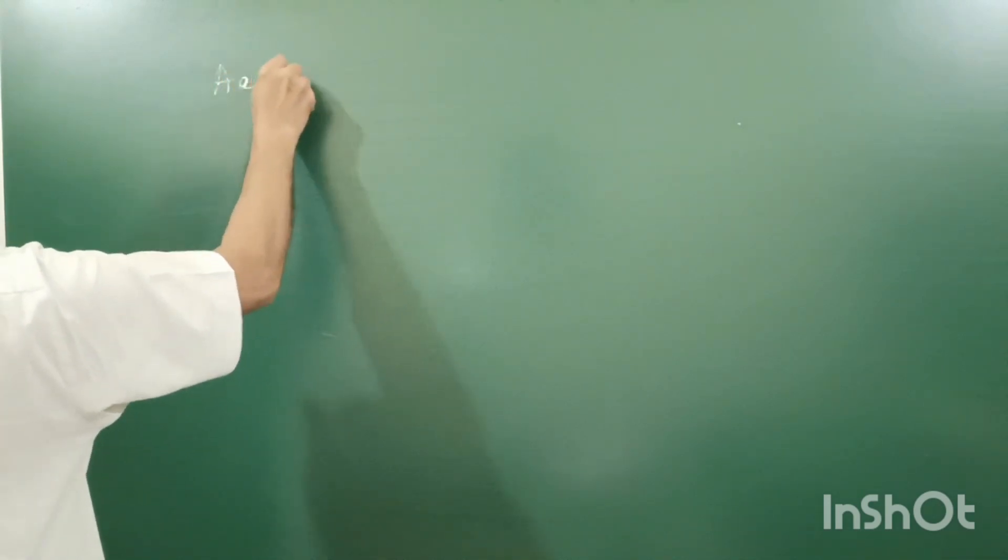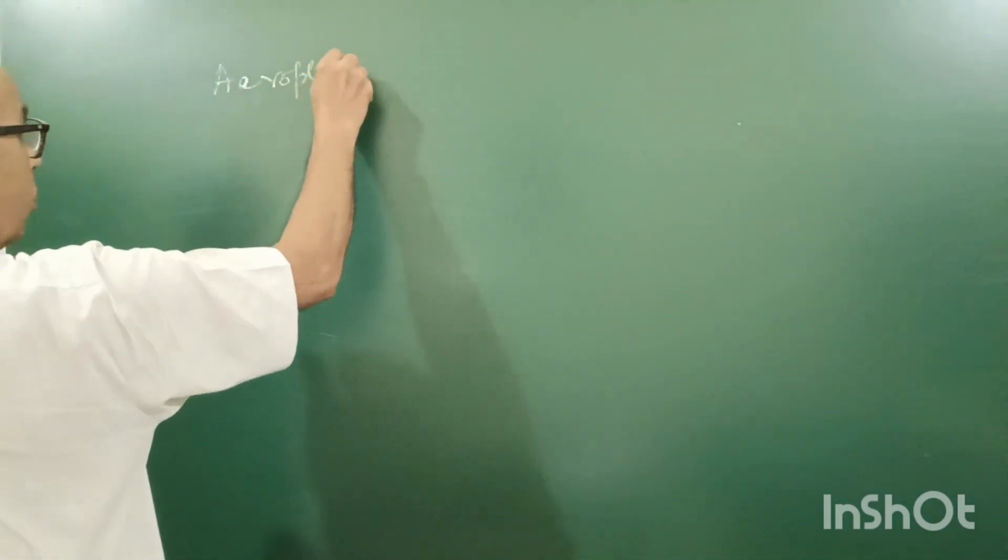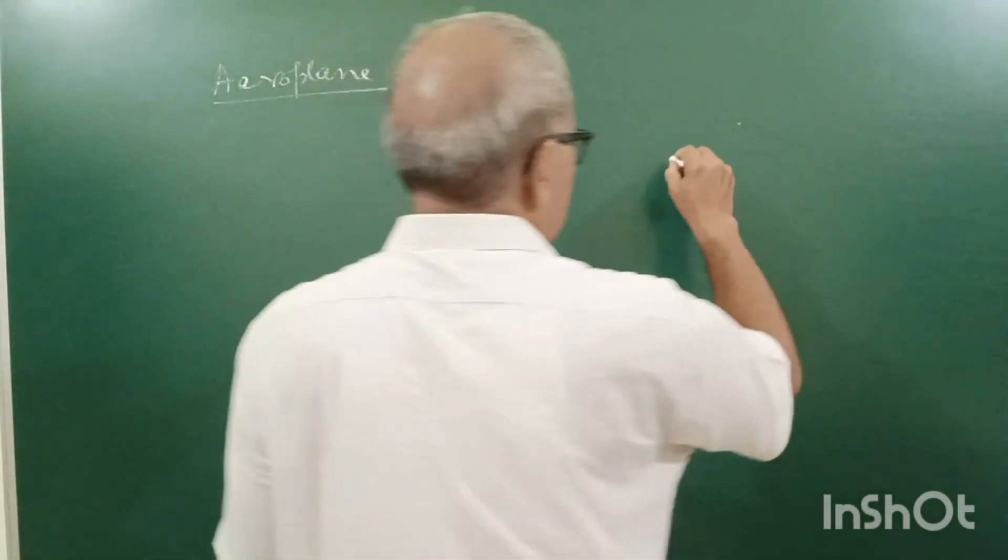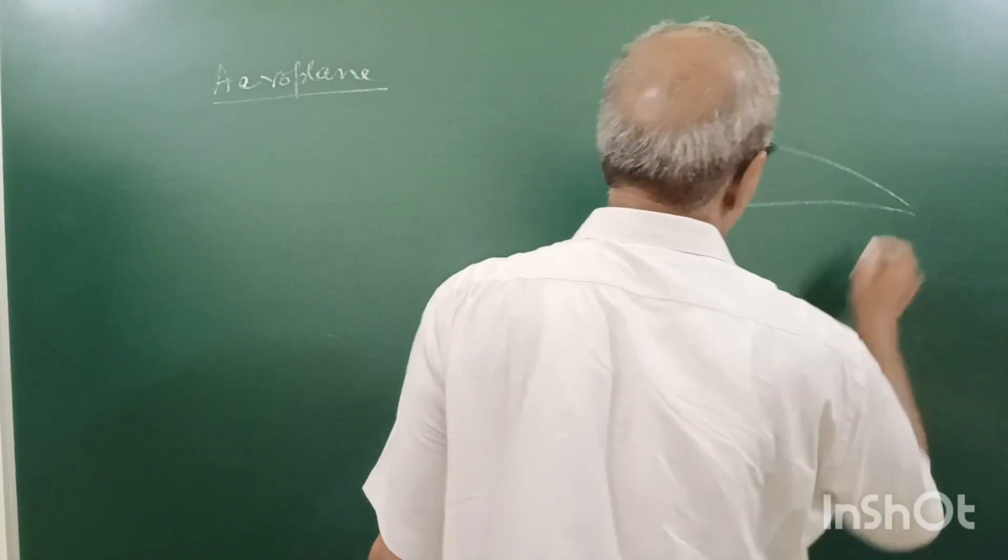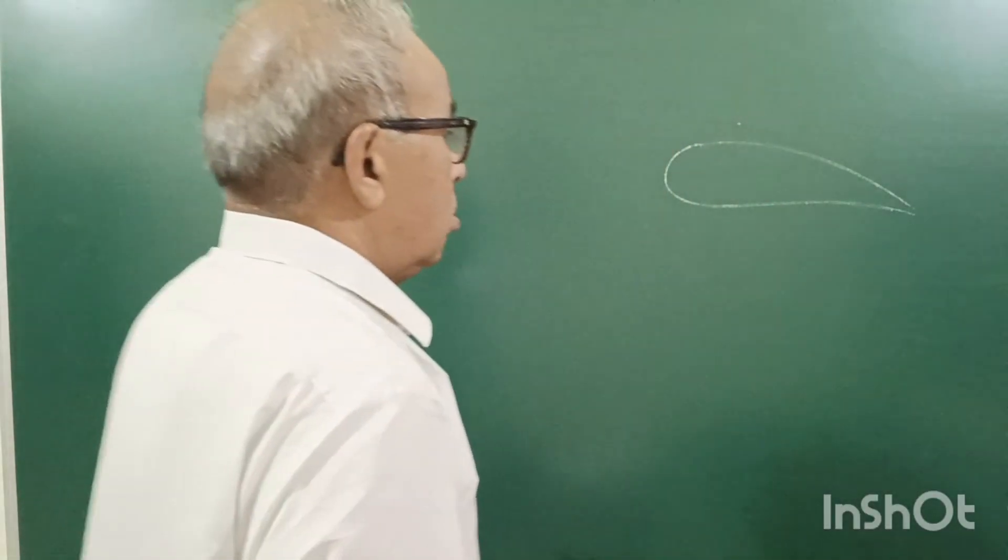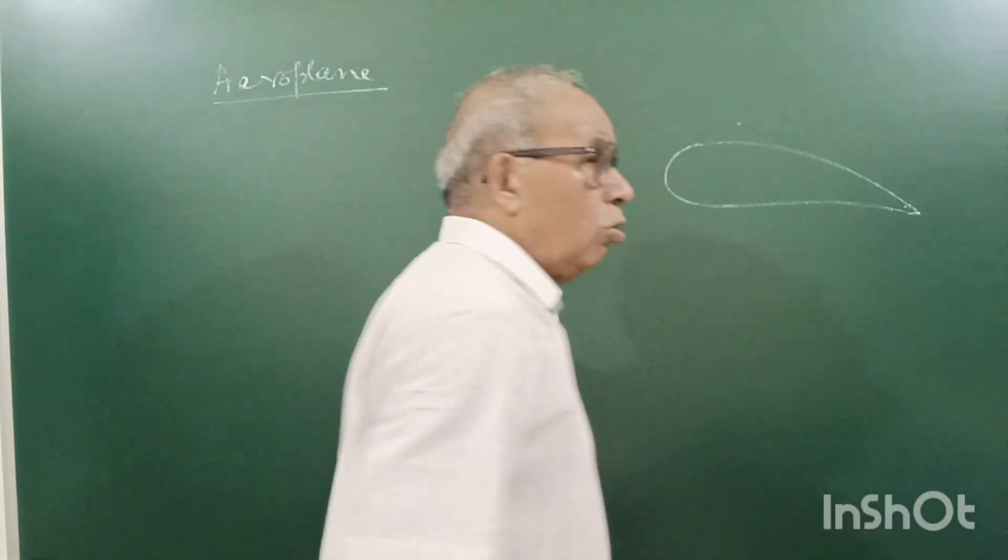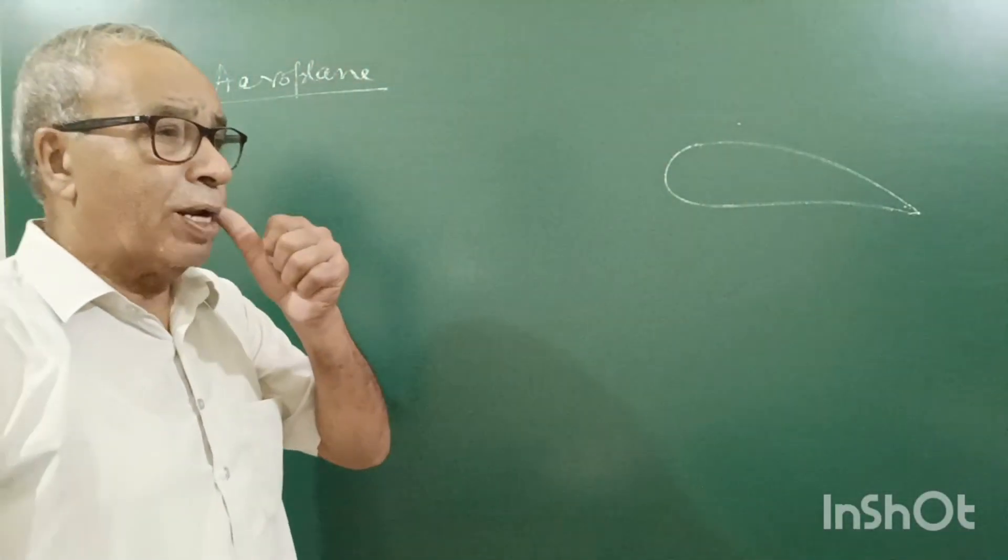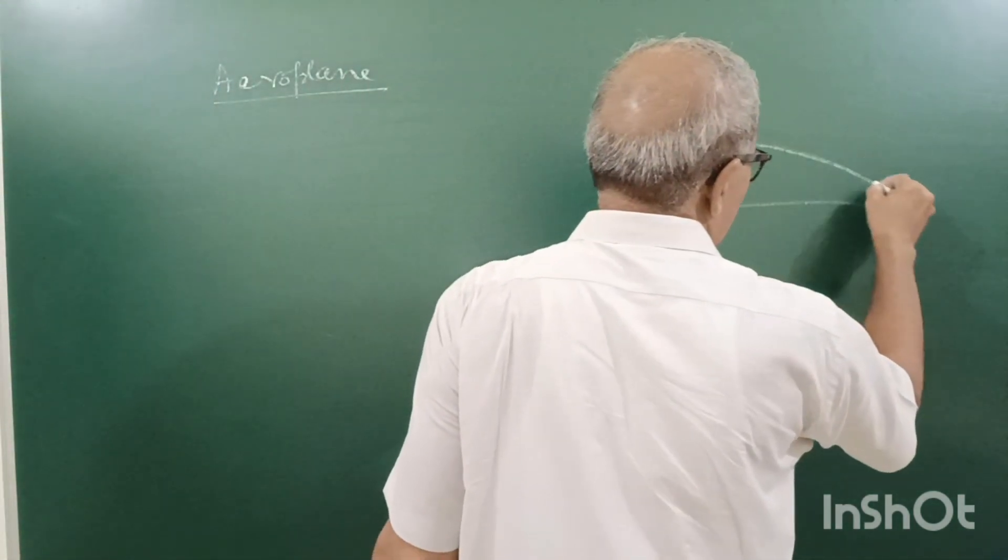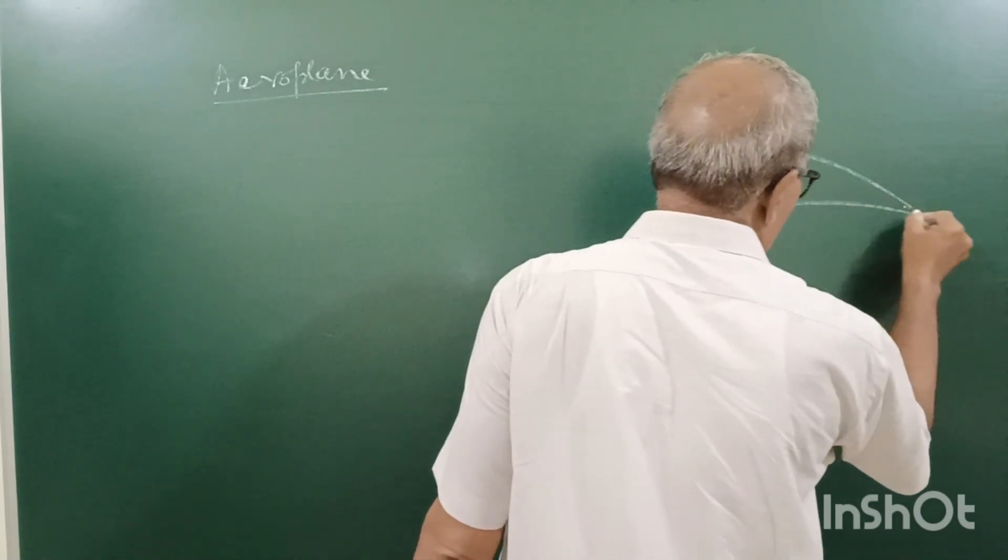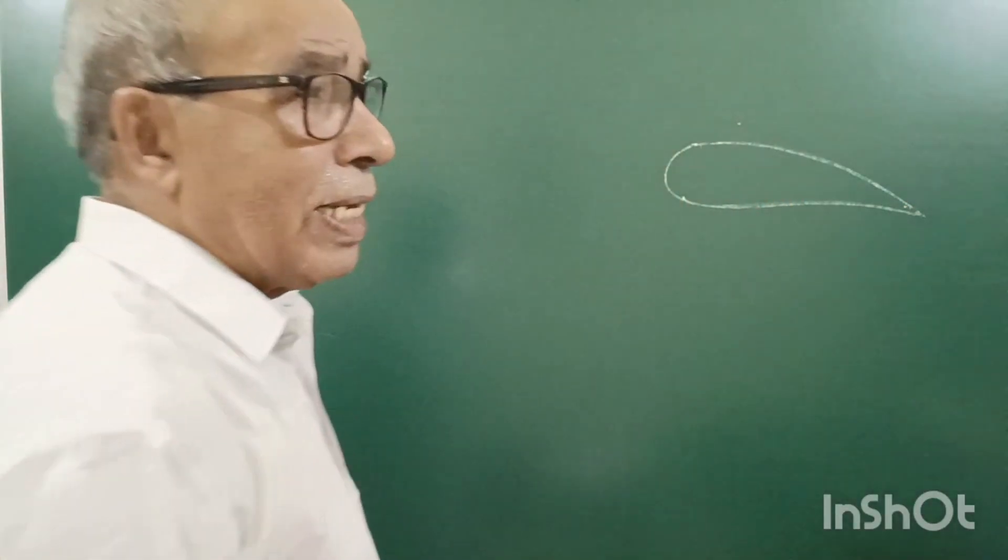Aeroplane flies in the air. Now aeroplane is also an application of Bernoulli's theorem. Actually, if this is the wing of the aeroplane like this. I told you where velocity is more, pressure is less. Bernoulli's theorem tells you where velocity is low, pressure is high.